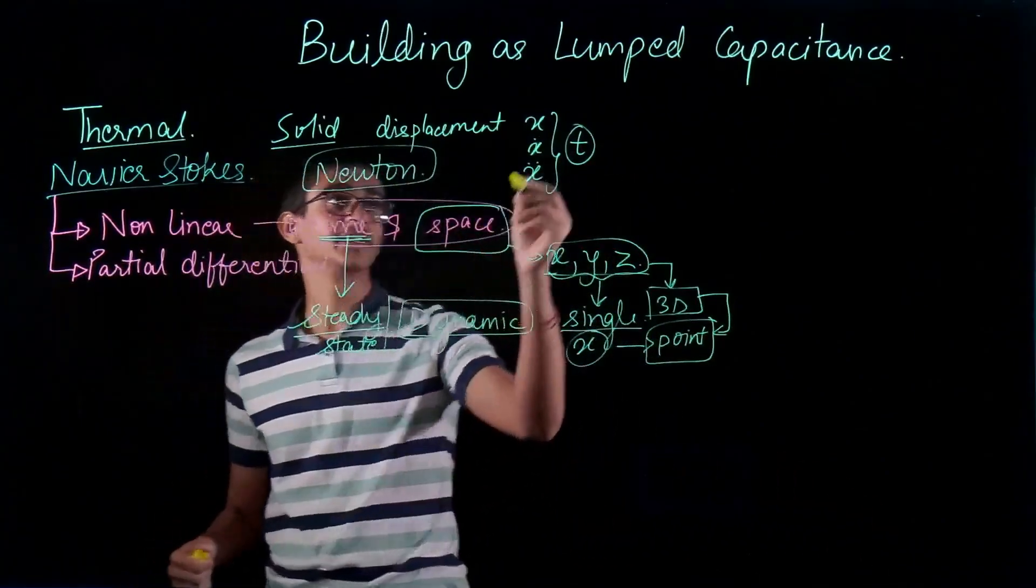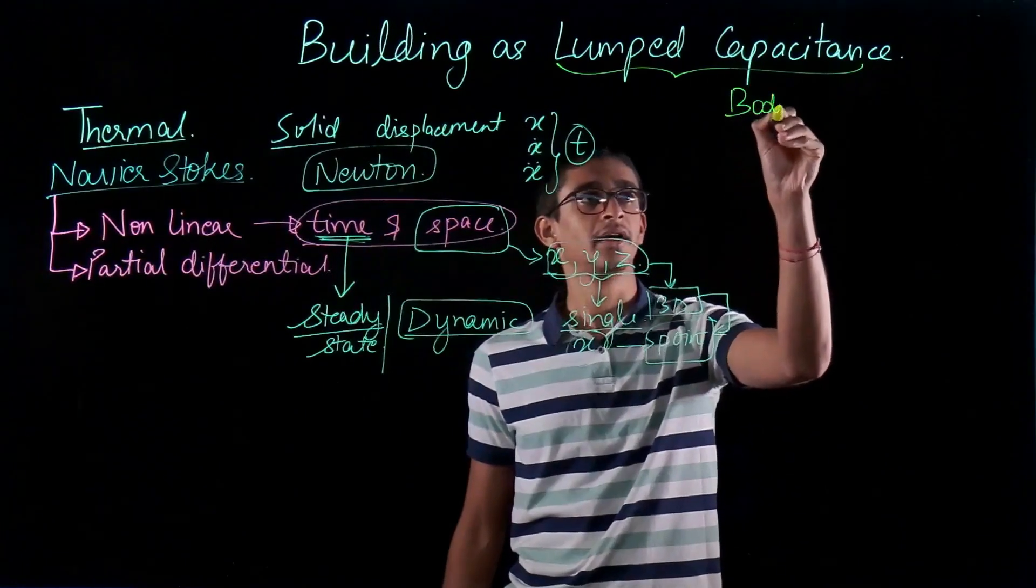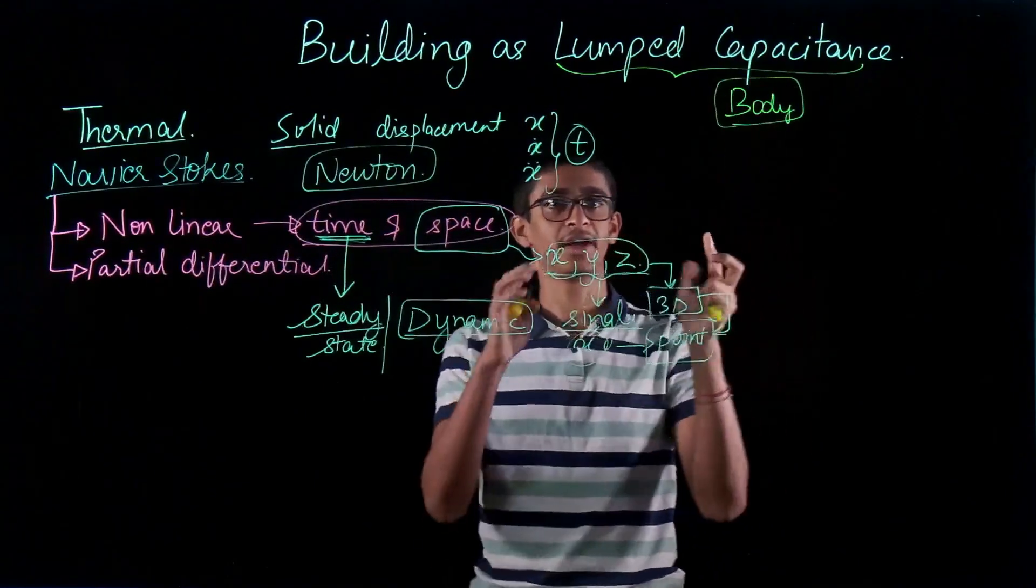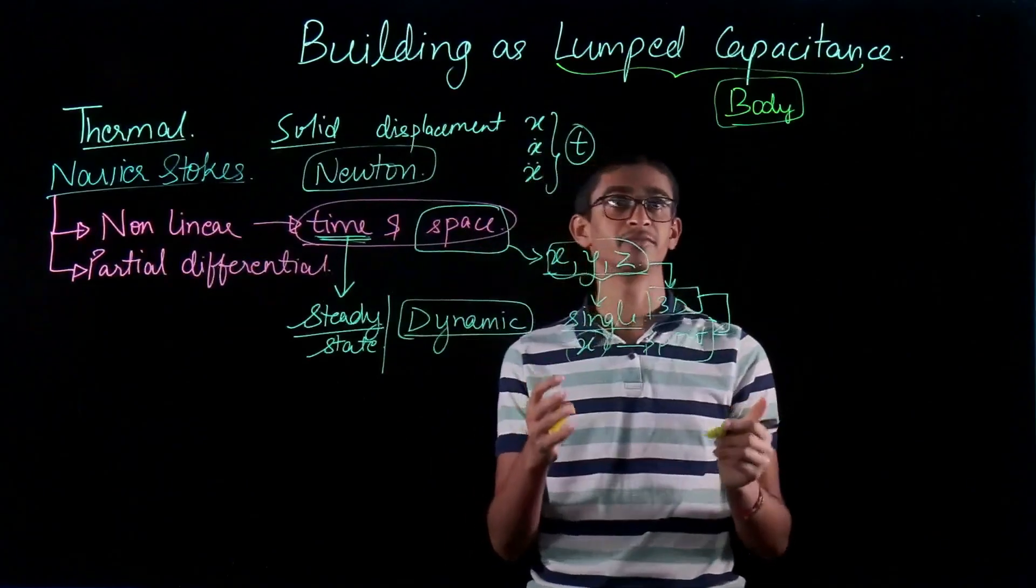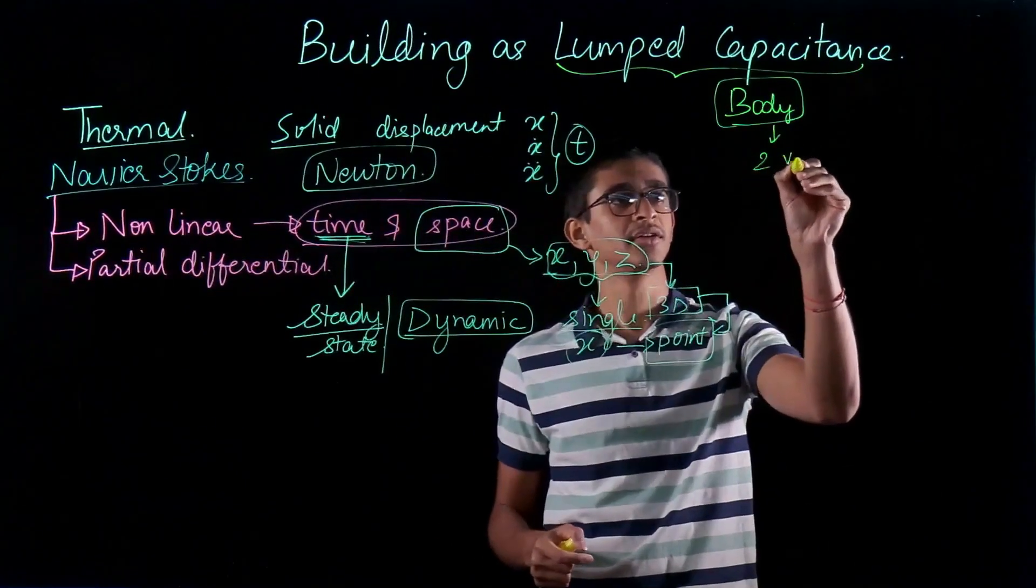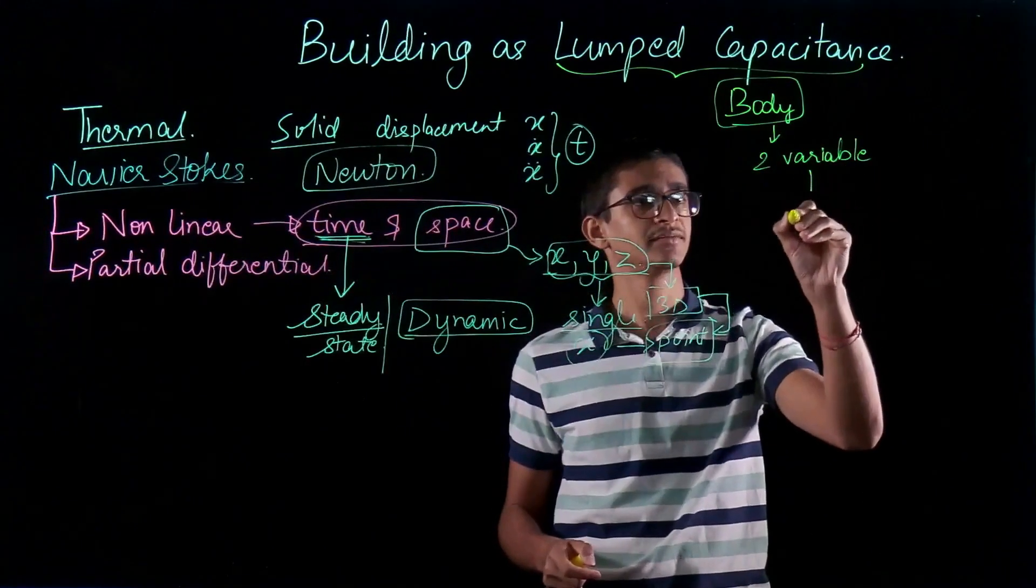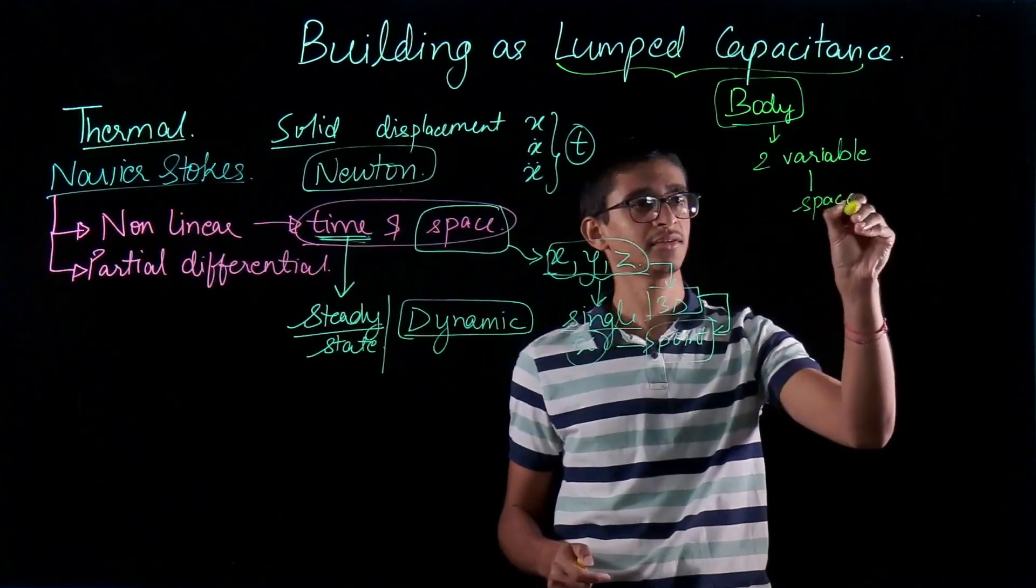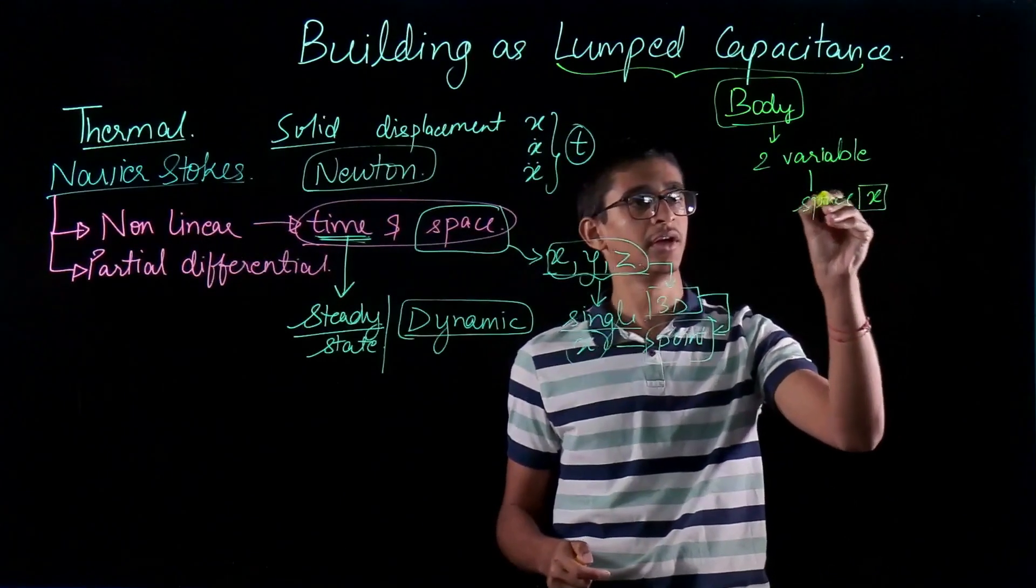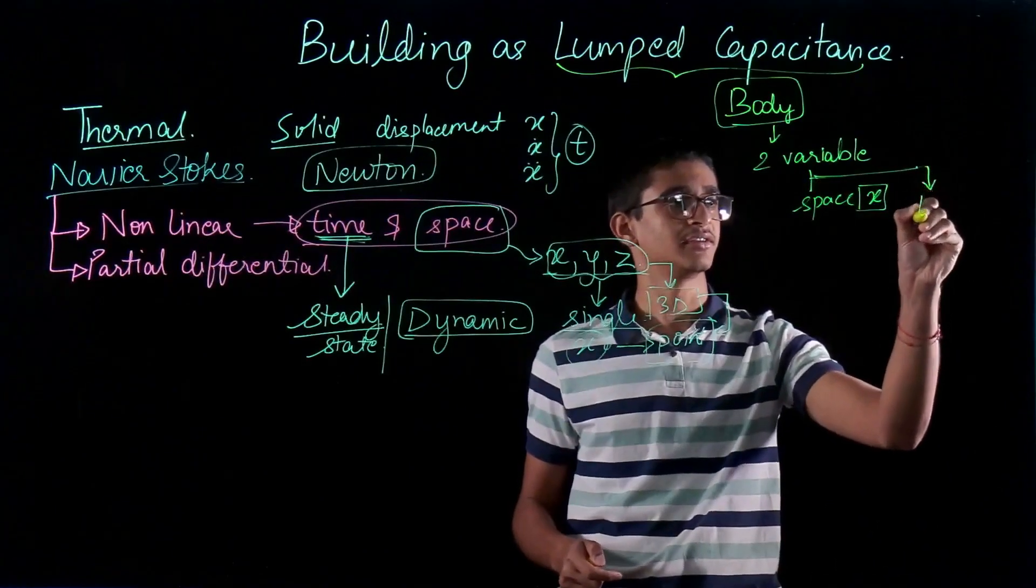What we do is we consider the whole body as a lump mass, as a single unit of mass, and for that unit of mass we have only two variables. Now one of the variables is space which is x and the other variable is time.